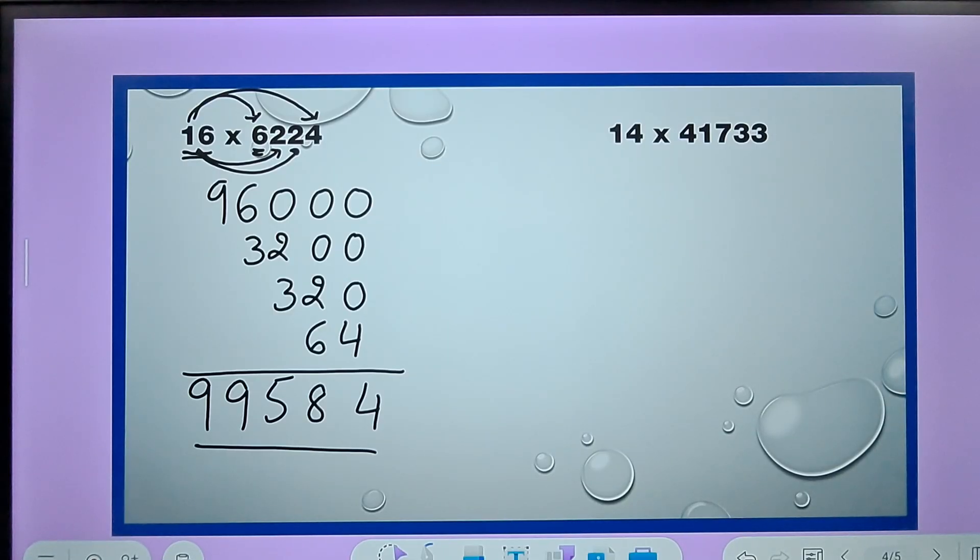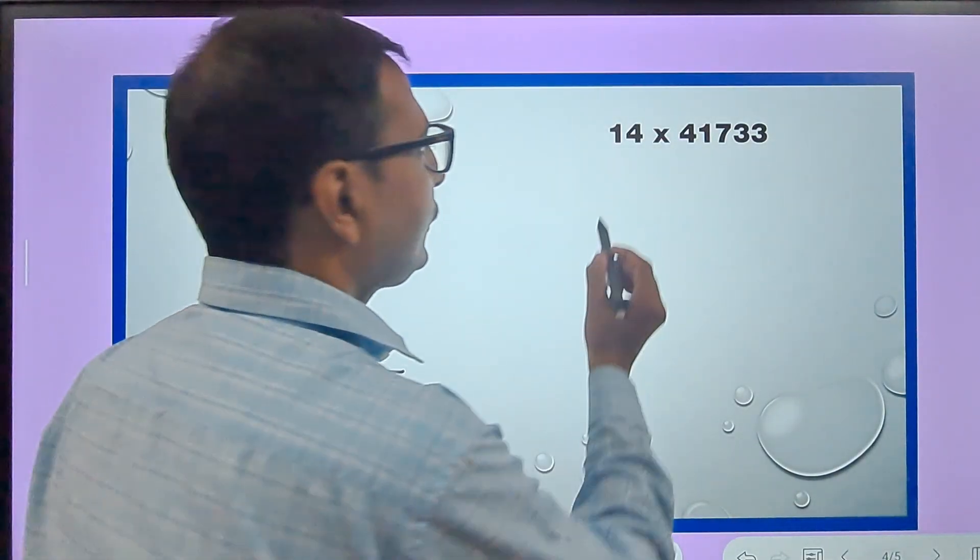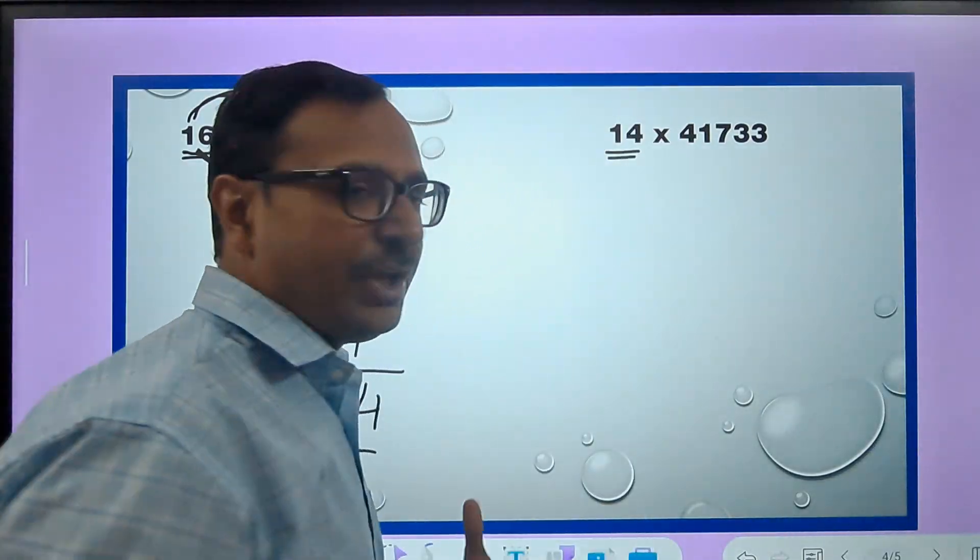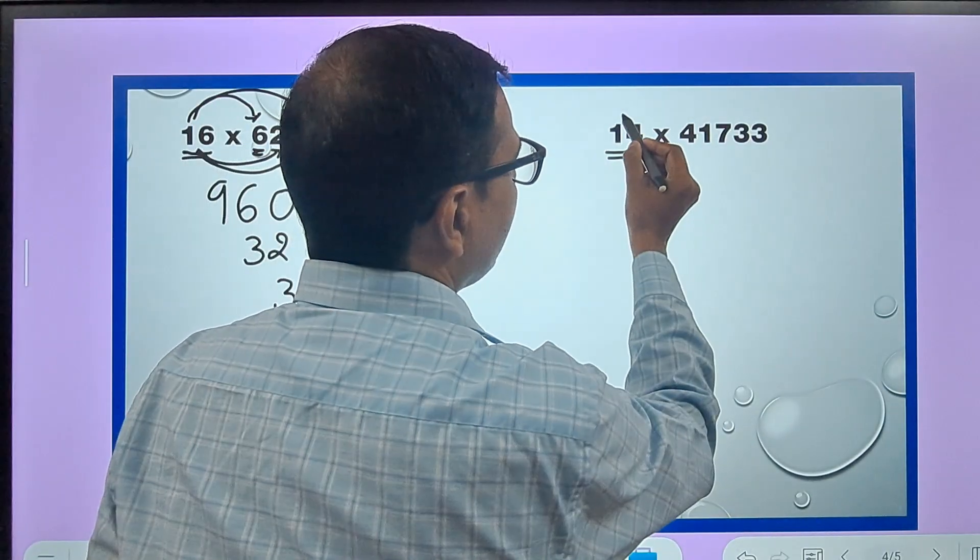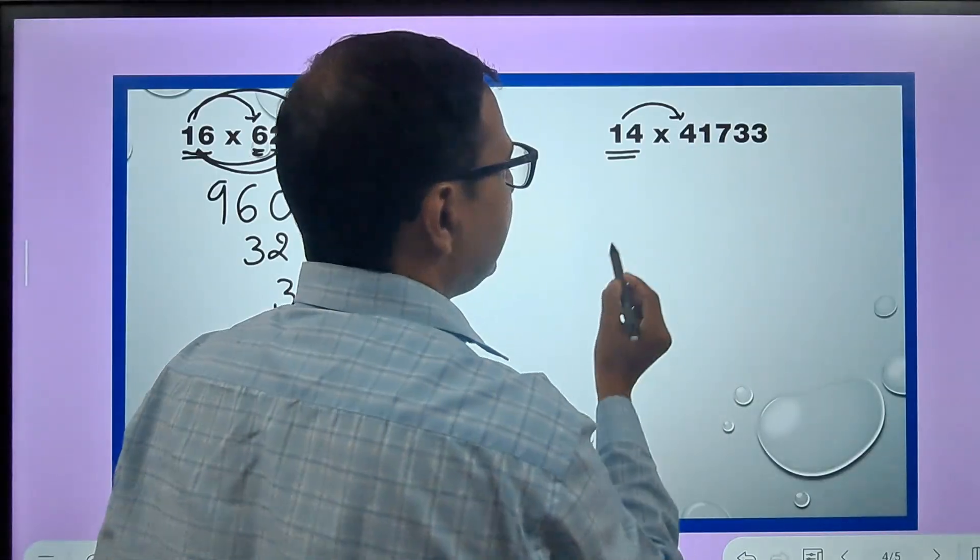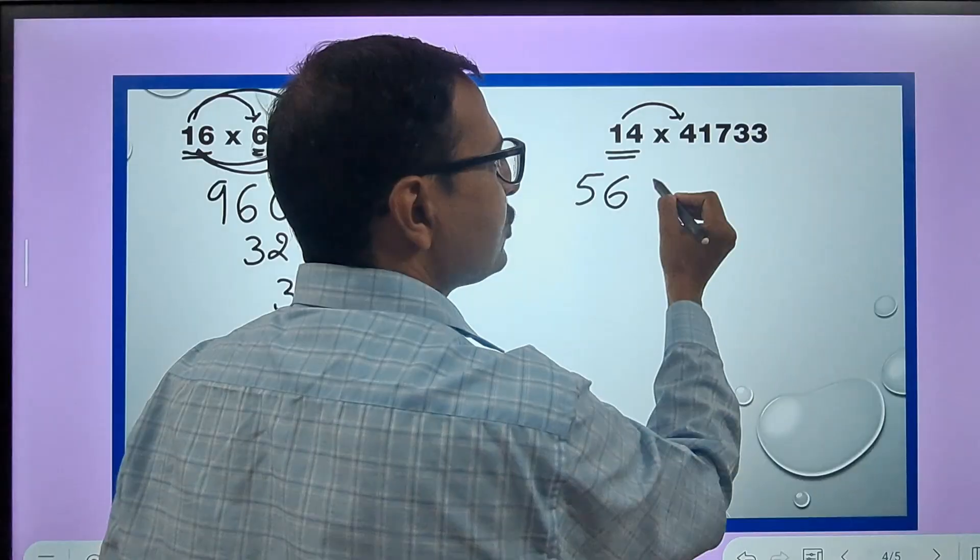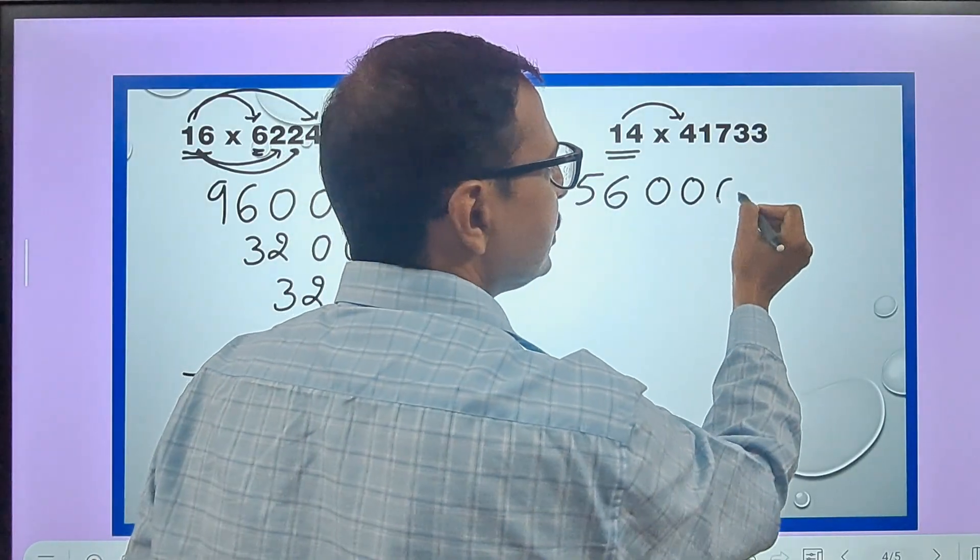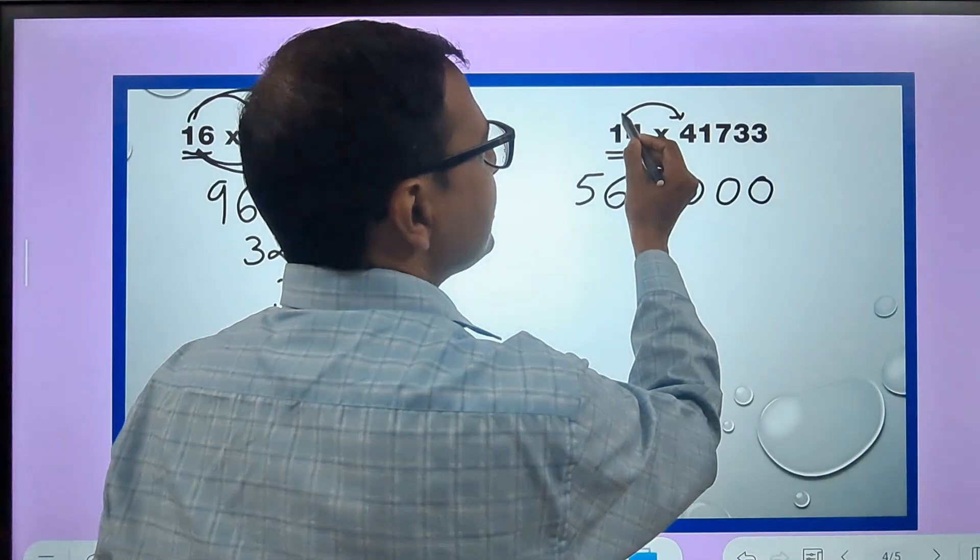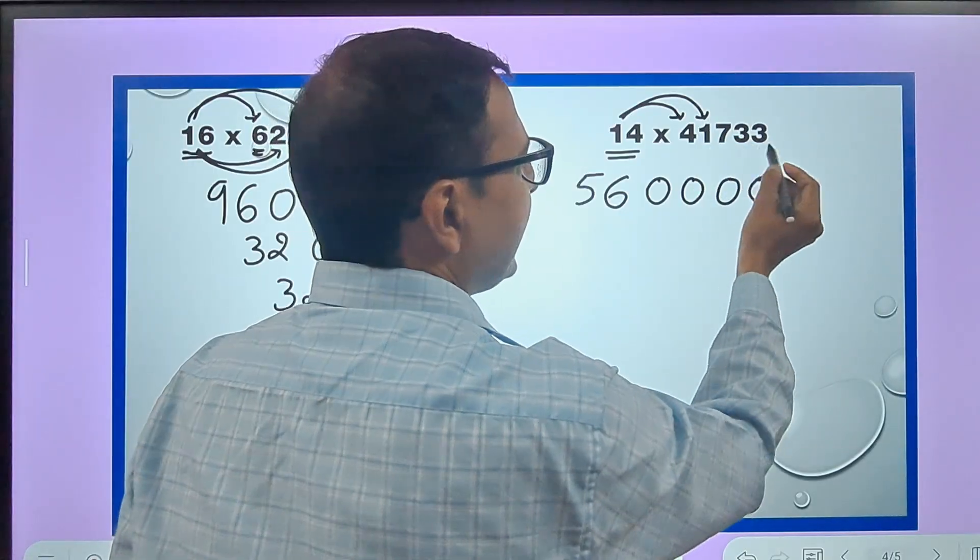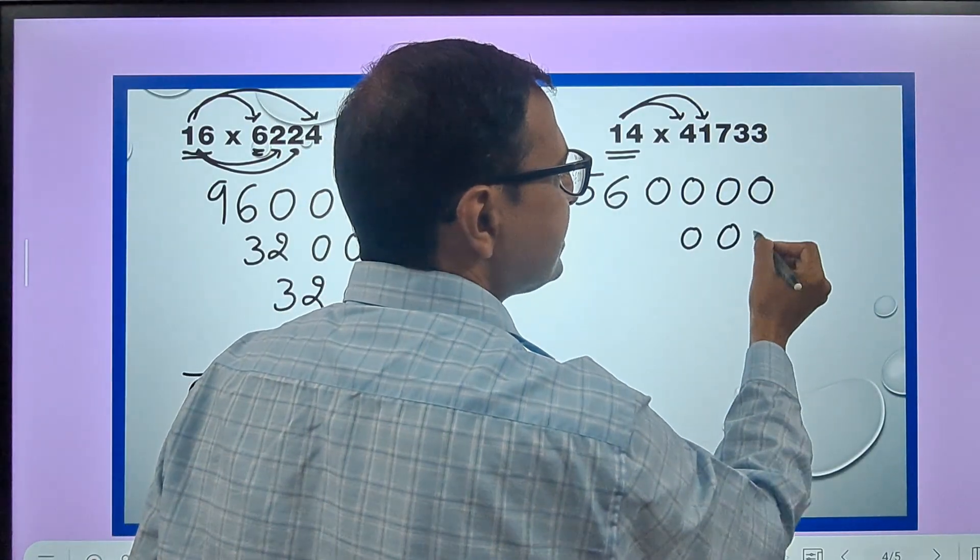Now 14 times table - we need to know 14 times table. 14 times 4 is 56, and how many zeros? 1, 2, 3, 4 digits after 4, so 4 zeros - 1, 2, 3, 4. Likewise, 14 times 1 is 14 and 3 zeros. So I will put 3 zeros like this and then write 14 below 60 here.